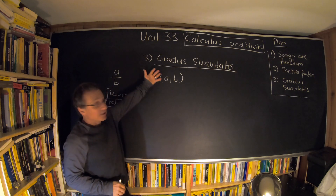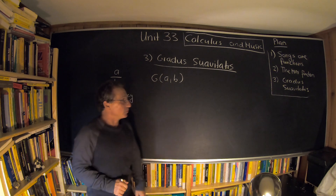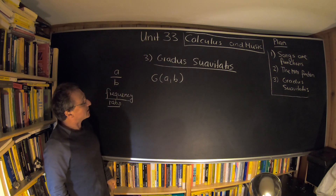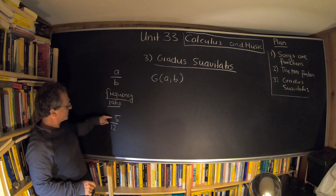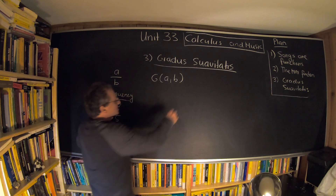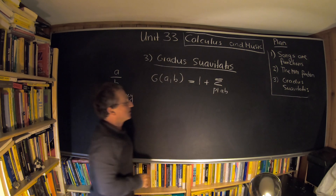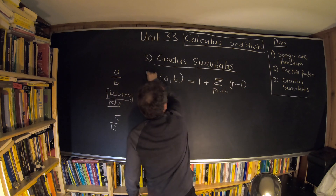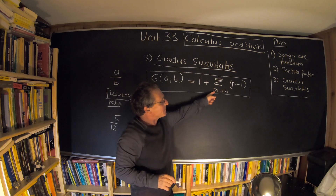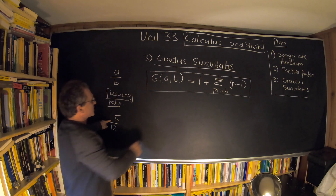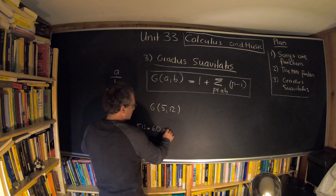The great Leonard Euler was interested not only in calculus and math but also in music. He wanted to quantify ratios of frequencies — some sound pleasant, some don't — and he assigned a number called the 'gratus suavitatis.' For integers a and b representing a frequency ratio a/b, he sums over all primes dividing a×b and takes (p − 1) for each prime factor.